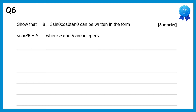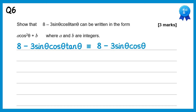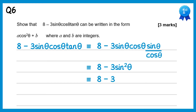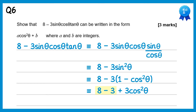For this question we'll start with the given expression and remove the tanθ, replacing it with sinθ over cosθ. So we have 8 minus 3sinθ·cosθ times sinθ over cosθ. The two cosθ's cancel, giving 8 minus 3sin²θ. We then replace sin²θ with 1 minus cos²θ, giving 8 minus 3(1 minus cos²θ). Expanding the bracket: 8 minus 3 plus 3cos²θ = 5 + 3cos²θ. So a = 3 and b = 5.